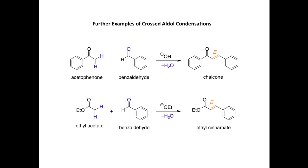Finally, we look at an example where ethyl acetate reacts with benzaldehyde in the presence of ethoxide ion, illustrating that we can use other carbonyl compounds as precursors in crossed aldol condensations. We can deprotonate one of the alpha hydrogen atoms in ethyl acetate using ethoxide ion as base. The enolate ion derived from the ester can then attack the carbonyl group of benzaldehyde, pushing electron density onto the oxygen. After protonation and elimination of water, we form this alpha-beta unsaturated ester. Again, we get the E-isomer of the double bond because that is the most stable isomer of the product.